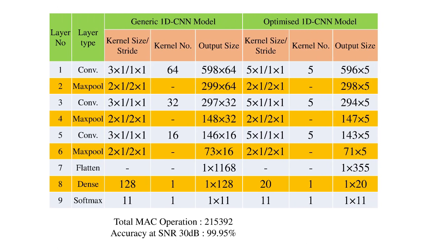Later, an optimized model is proposed with a kernel data length of 5 for all convolution layers, and the convolution kernel numbers are changed to 5 for all layers. The neurons in the dense layer are reduced to 20. After successful training, it has been found that the MAC operations are reduced to 76,845 and the accuracy reached 99.59%.